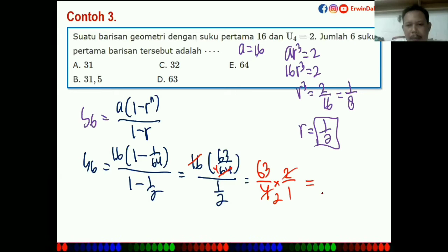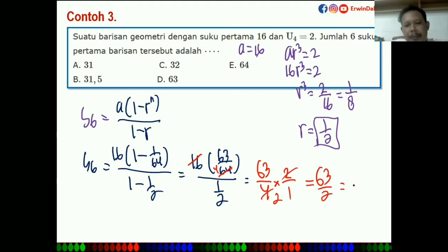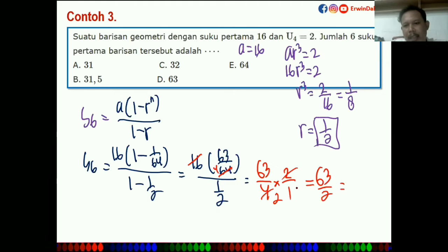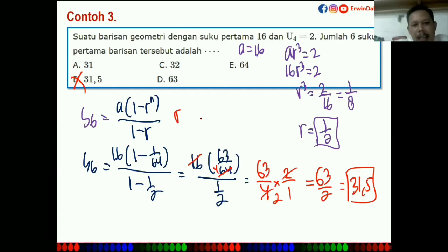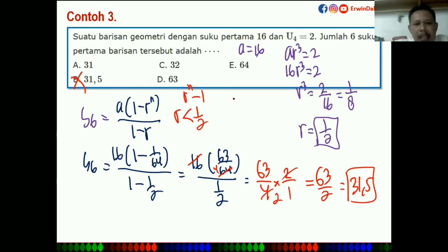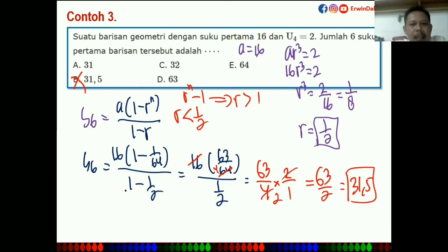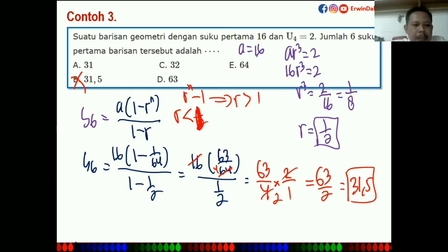Hasilnya sama dengan 63/2 = 31,5. Itulah jawabannya. Catatan di rumus: yang R-nya lebih kecil dari 1 pakai rumus A(1-R^N)/(1-R), sedangkan yang R-nya lebih besar dari 1 pakai A(R^N-1)/(R-1), supaya tidak terjadi nilai negatif.